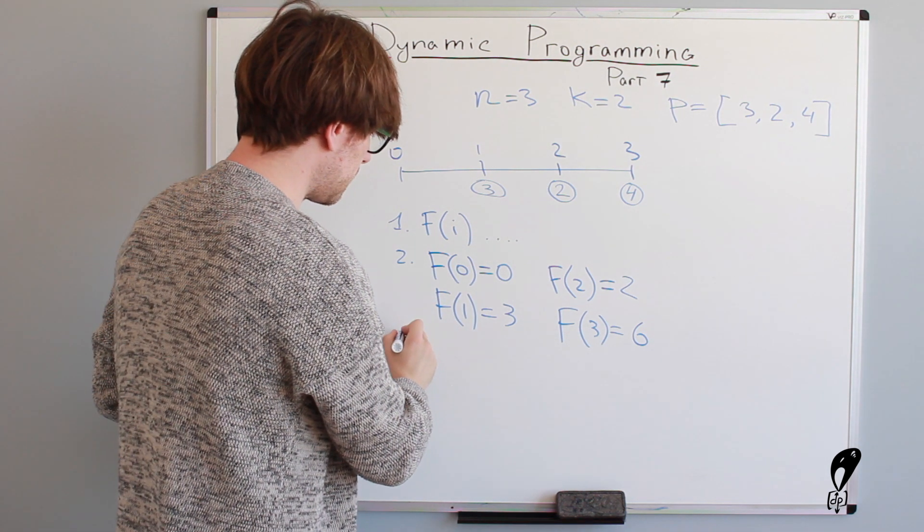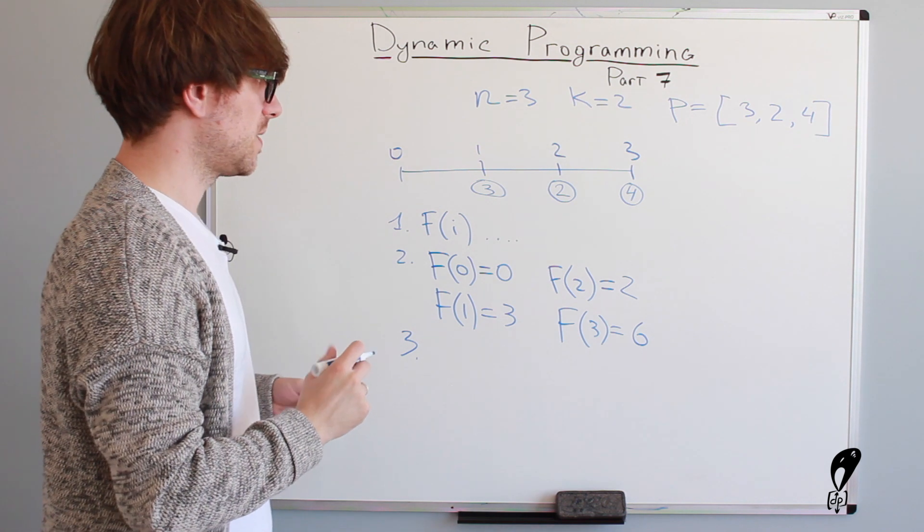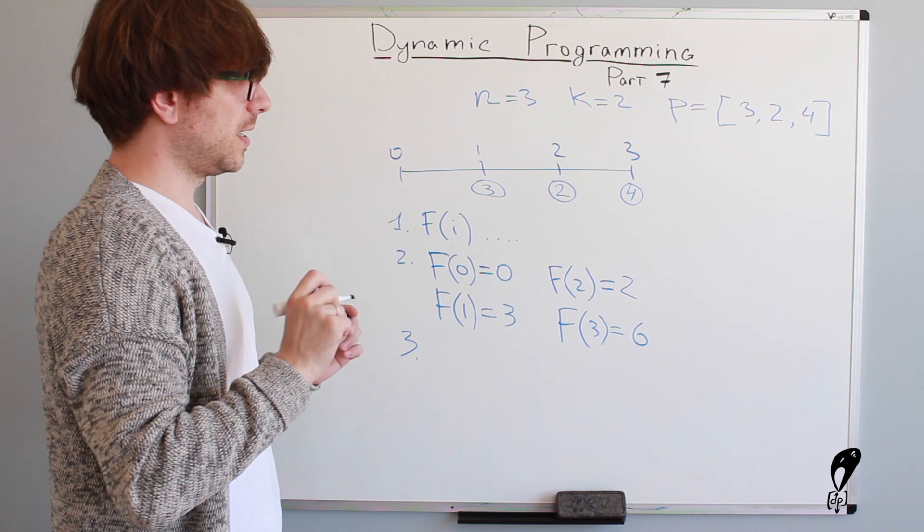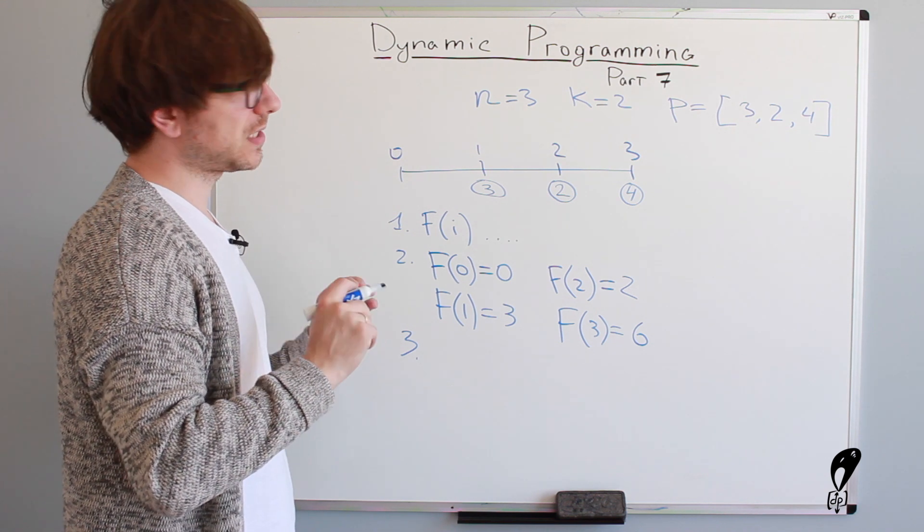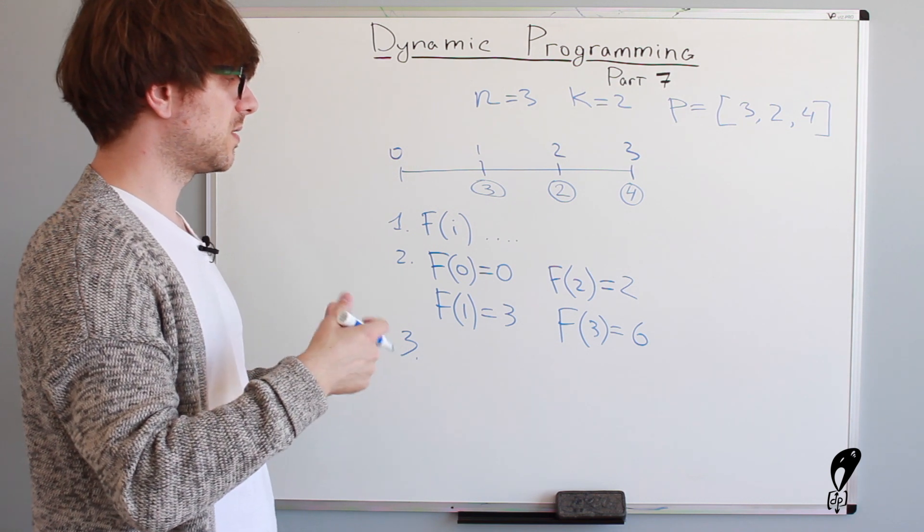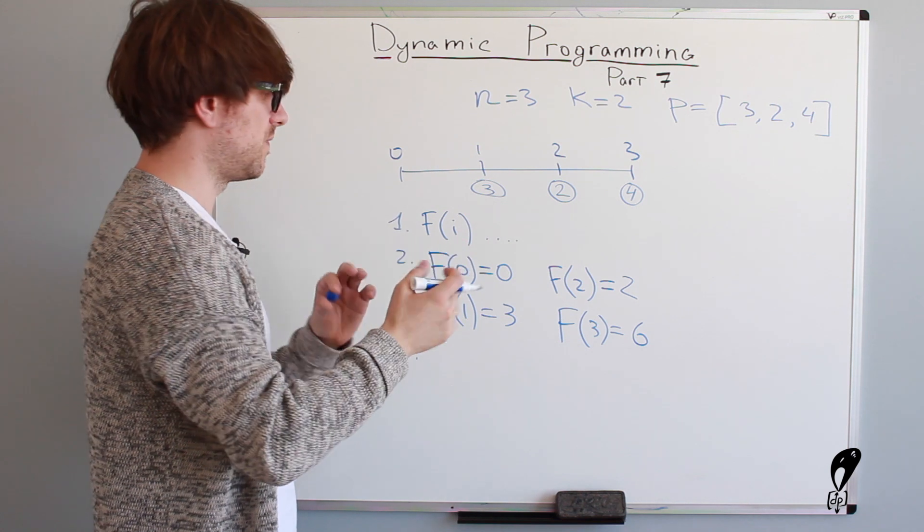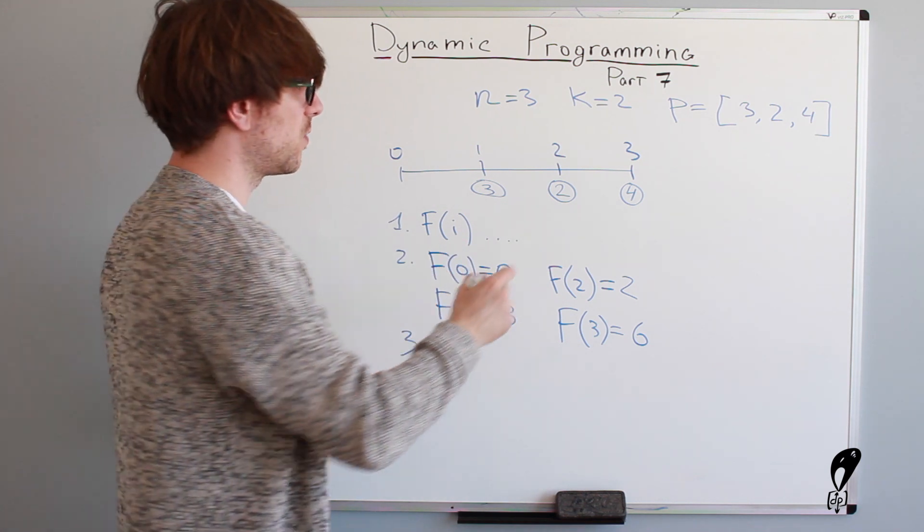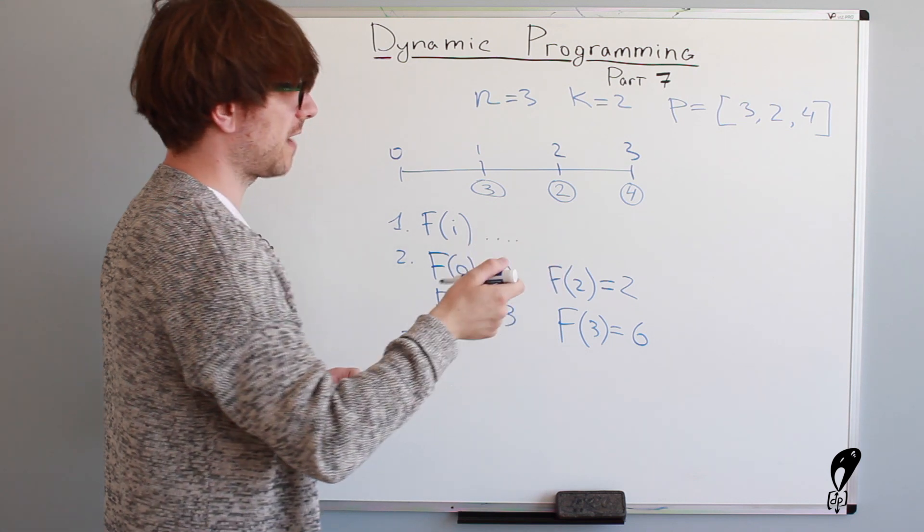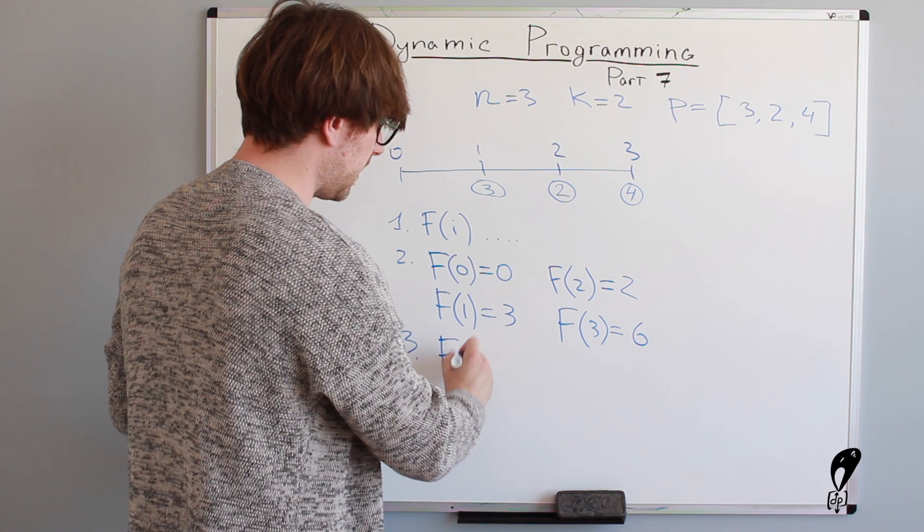Okay. So the third step is write down the transition function. And when it comes to transition functions, I like to think about them in a way, basically from a perspective when the problem is almost solved. So kind of like from the end of the problem, where are we trying to get to? We're trying to find the cheapest amount we have to pay to get to the top. So let's imagine we're already at the top, f of n.